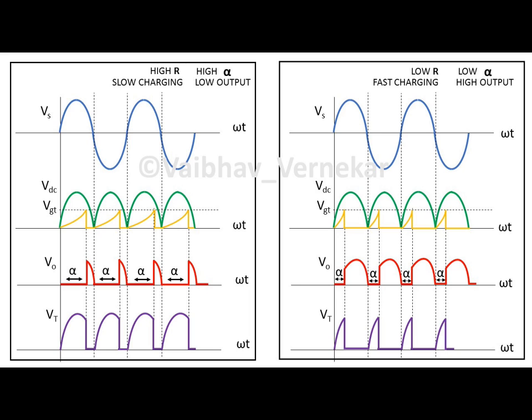If a high resistance is put in series with a capacitor, then it takes longer to charge. Hence the firing angle alpha is high. As a result the output obtained is low.